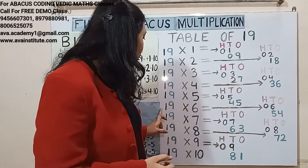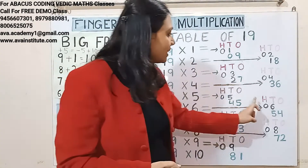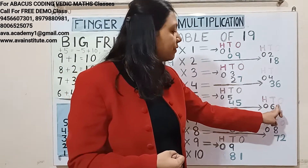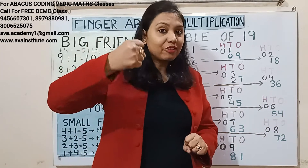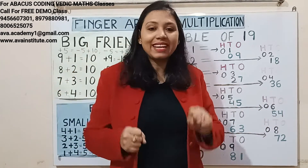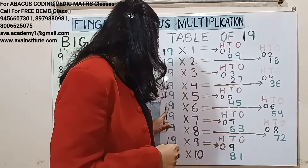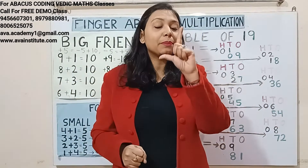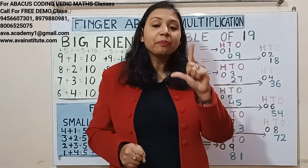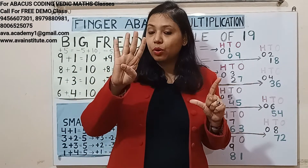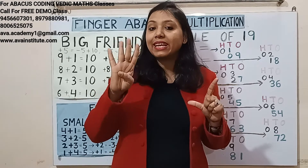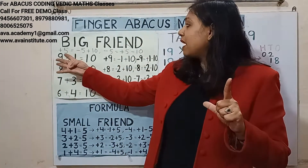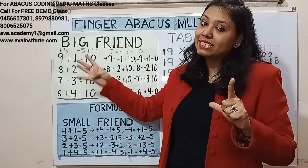Next, 19 sixes are: 1 six is 6 — in hundreds we represent 0, in tens we represent 6. 9 sixes are 54 — in tens we represent 50 and in ones we represent 4. 4 we can add. How to add 50 here? Plus 5 formula is minus 5 plus 10.